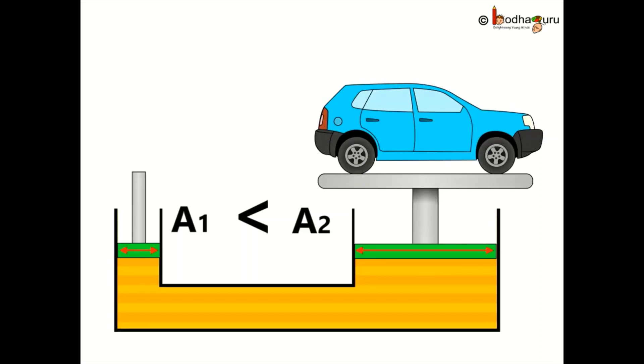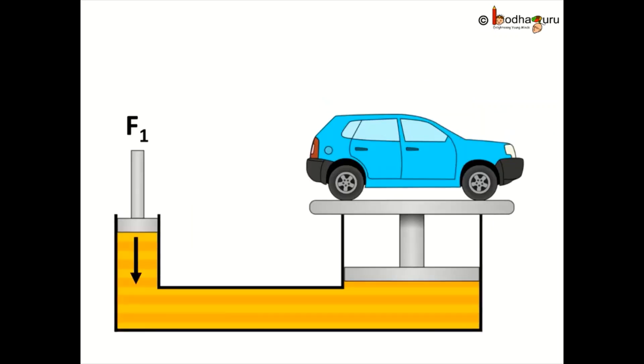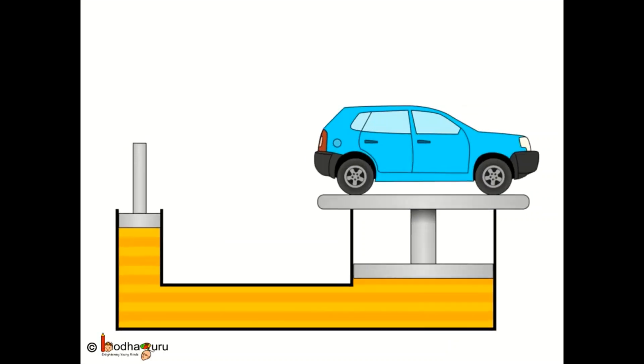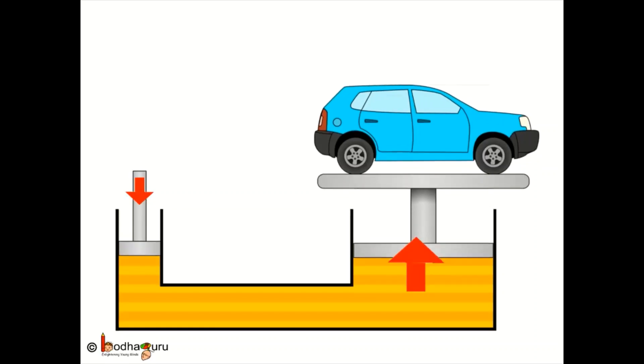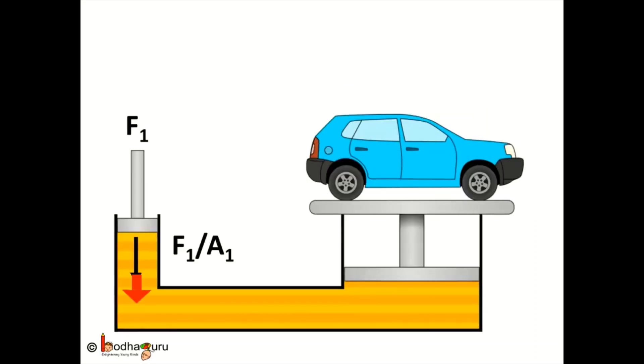So here we say A2 is greater than A1, where A2 and A1 are the cross sections of the two arms of the U-shaped tube. Now when we apply force which is equal to F1 to left piston, then it will create pressure which is equal to F1 divided by A1. As we know, pressure is equal to force by area. Now the cross section of A1 is small so we can generate greater amount of pressure easily by applying a moderate amount of force.